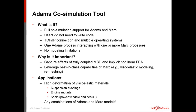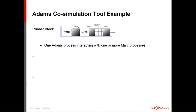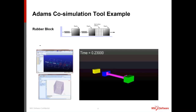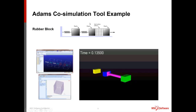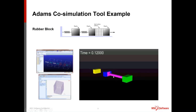A simple example shows a rubber block connecting two rigid blocks — actually three rigid blocks, two of which are connected with springs, and then there is a very soft rubber block modeled in MARC.